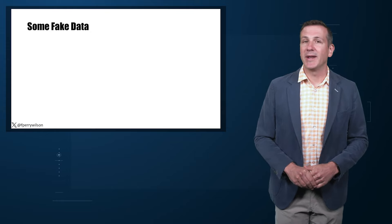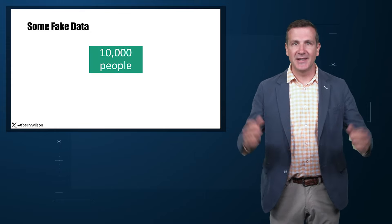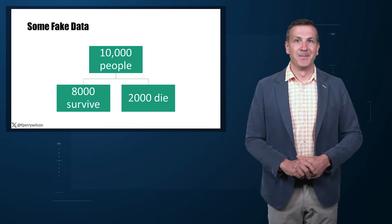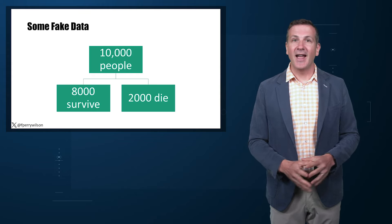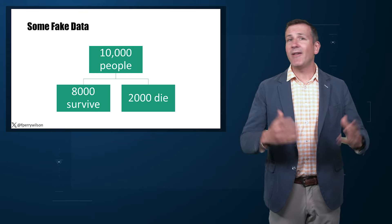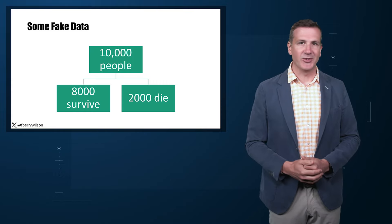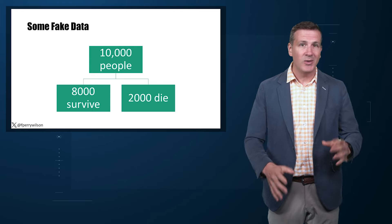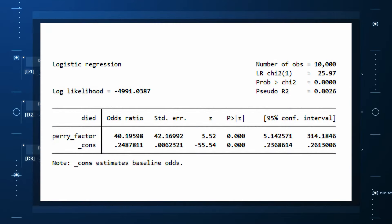A fake example to illustrate my point. Let's say we have 10,000 individuals who we follow for 10 years and 2,000 of them die. At baseline, I measured a novel biomarker — the PERI factor — in everyone. The PERI factor has only two values: zero or one. I then do a standard associational analysis and find that individuals who are positive for the PERI factor have a 40-fold higher odds of death than those who are negative for it.